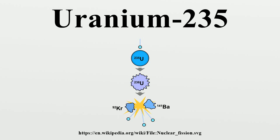Uranium-235 is an isotope of uranium making up about 0.72% of natural uranium. Unlike the predominant isotope uranium-238, it is fissile, i.e., it can sustain a fission chain reaction. It is the only fissile isotope that is a primordial nuclide or found in significant quantity in nature. Uranium-235 has a half-life of 703.8 million years.